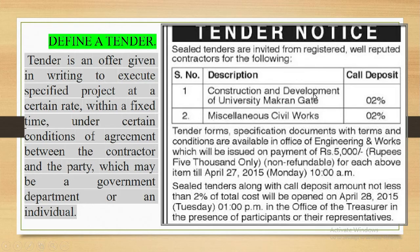This is the tender notice. Construction and development of university Macron gate, deposit two percent, miscellaneous civil works in the university. Here it is explained each and everything in the tender notice. Besides this, in tender notice, client provides the different drawings to the contractors.